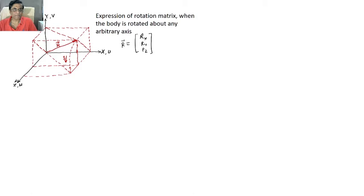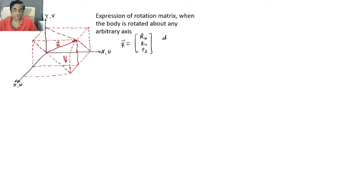Directly, I cannot obtain the composite rotation matrix. So what I am doing: I am trying to coincide, by some successive orientation operations, this axis with any of the principal axes. Here, I am coinciding it with the z-axis, and then about the z-axis, I will give the operation which is needed — that is, rotation about R by an amount phi.